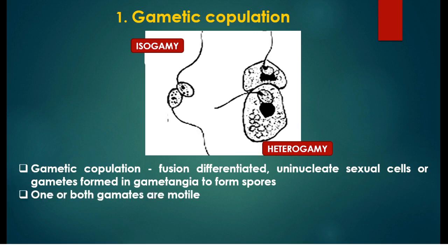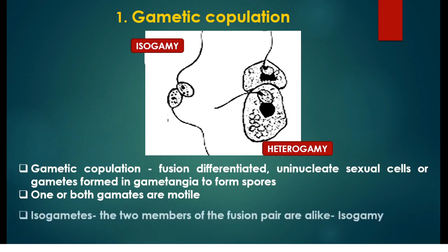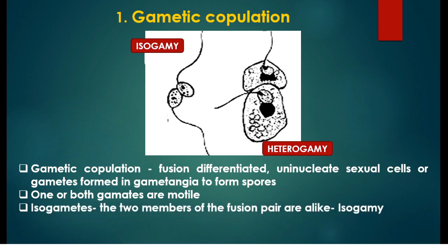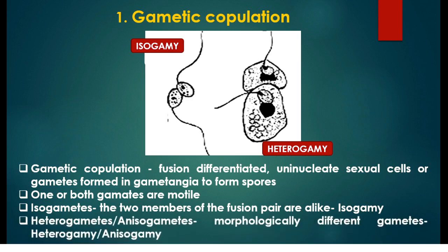Both gametes or one of the gametes will be motile. If the male and female gametes are morphologically similar they are called isogametes and their fusion is called isogamy. If they are morphologically different they are called heterogametes or anisogametes and their fusion is called heterogamy or anisogamy.